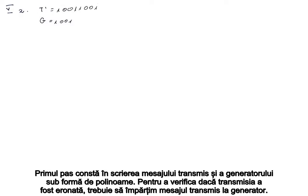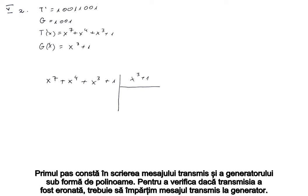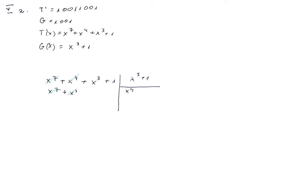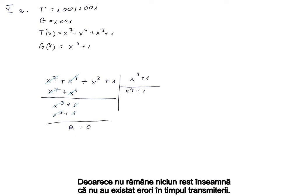The first step is to write the transmitted message and the generator as polynomials. To check if there were any errors during transmission, we have to divide the transmitted message by the generator. Because there is no rest left, it means that there were no errors during transmission.